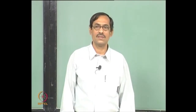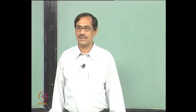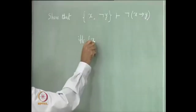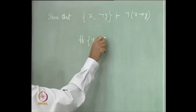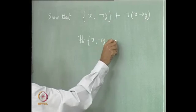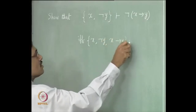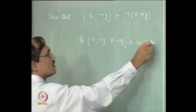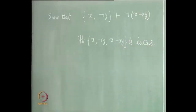Just use reductio ad absurdum. You say that this happens if and only if the set {x, not y, x implies y} is inconsistent, right? And this being inconsistent is obvious.